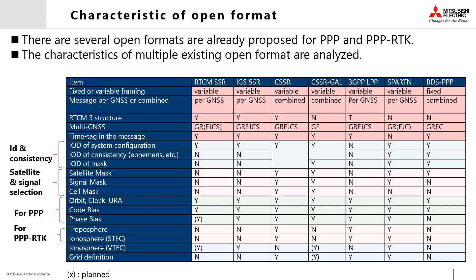There are several open formats already proposed for PPP, and some formats also support PPP-RTK. In this paper, the characteristics of multiple existing open formats are analyzed. We include RTCM SSR, which is an industrial standard; IGS SSR; Compact SSR; 3GPP LPP, which is a mobile communication standard for 5G; SPARTN, which is applied for commercial service; and a format for GAL OS PPP.